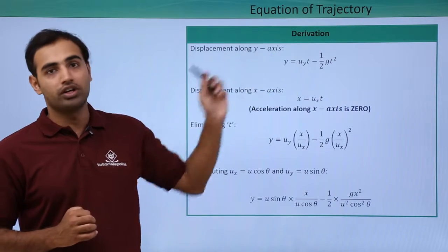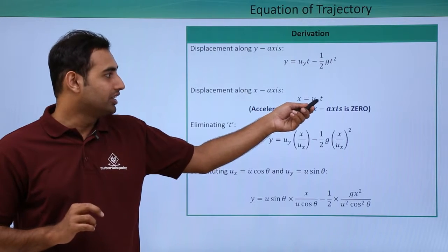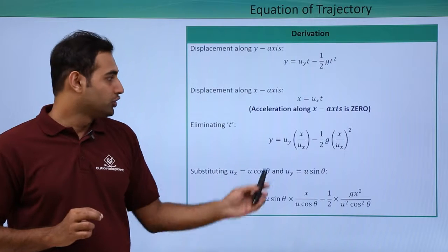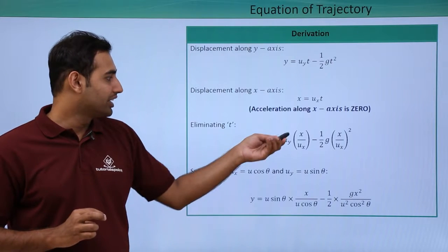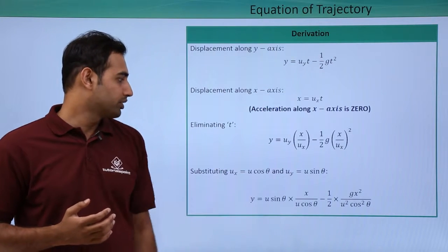Now we have two very straightforward equations. I have to simply eliminate time. So what I will do is, I will put the value of t as x upon ux into the first equation. So once I do that, I put the value of t as x upon ux everywhere in the first equation. So I obtain this equation.